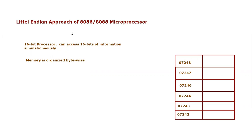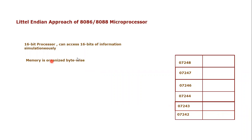If you are following my series, the 8086 and 8088 Intel microprocessors are 16-bit processors. They can access 16 bits of information simultaneously. However, memory is organized in byte-wise format. As shown in this diagram, these are the addresses of the memory and this is where we store information. Every memory location can hold 8 bits of information — that is why memory is organized byte-wise.